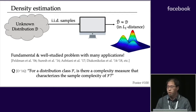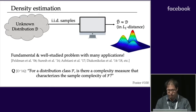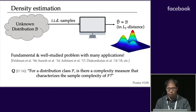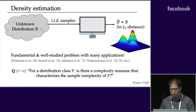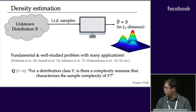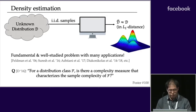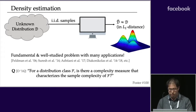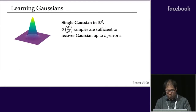There's an open problem to better understand the sample complexity for density estimation, and more specifically, whether there is some notion of complexity that will completely characterize the sample complexity of a class F. There has been a lot of work recently on getting tight bounds for various classes, and this work explores tight bounds for a very fundamental class: mixtures of Gaussians.